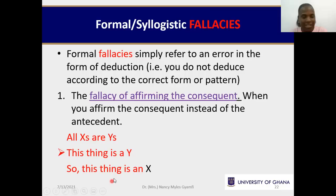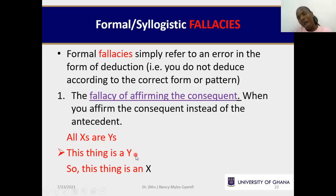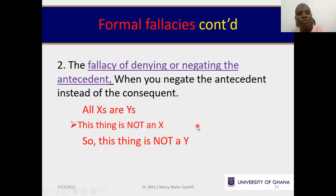On the screen you see the fallacy of affirming the consequent. For correct modus ponens with all X's are Y's, we should say: this thing is an X, therefore it is a Y. But the fallacy says: this thing is a Y, therefore it is an X. They are affirming the consequent. The second fallacy is denying or negating the antecedent. For modus tollens: all X's are Y's, we should say this is not a Y, then conclude it is not an X. But the fallacy says: this thing is not an X, therefore it is not a Y. We already saw the problem — it could be not a mango but still inside the set of fruits, perhaps because it's a banana.